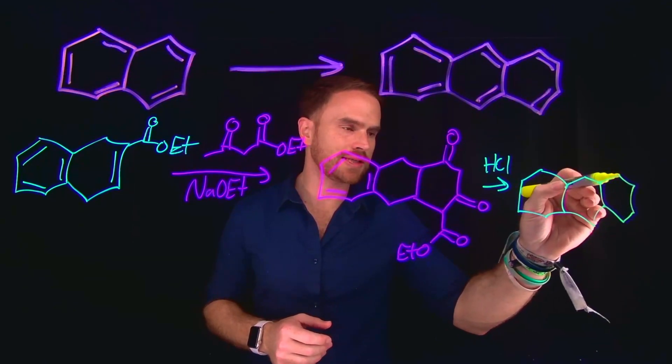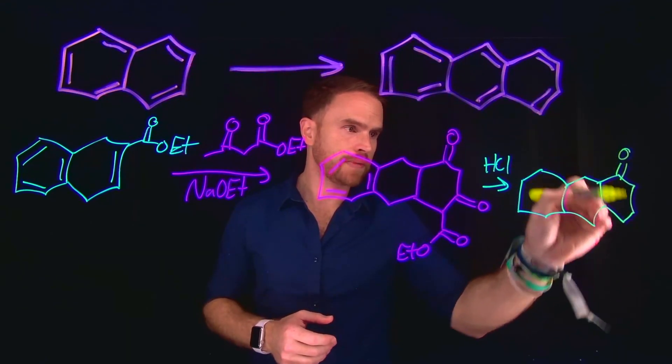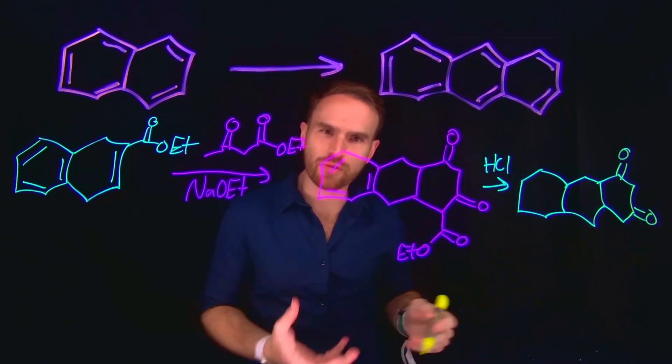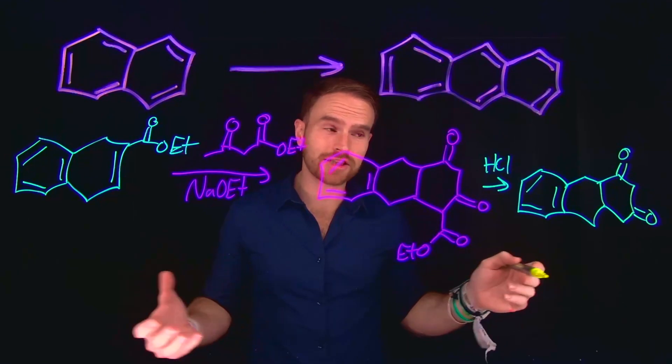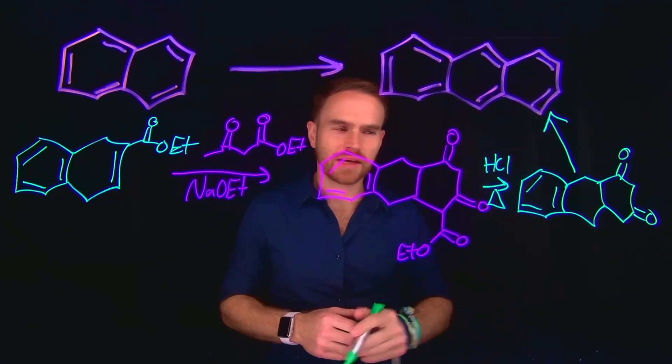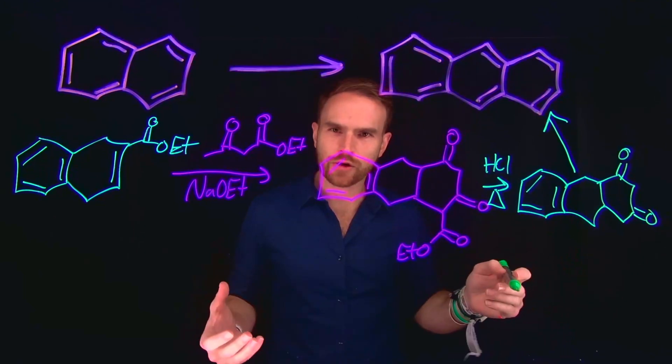But from here, now we can take this product which has these two ketones and move on to our next step. So I'll finish drawing in the double bonds. From here, we're actually only one step away from our final product. This molecule is called anthraquinone.